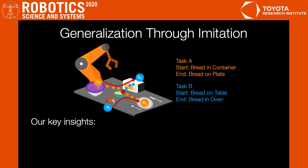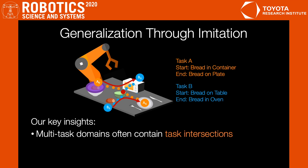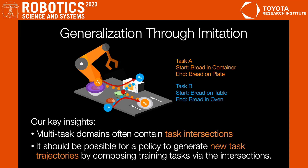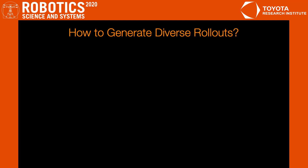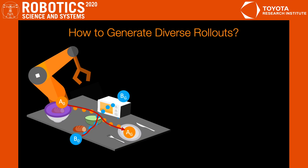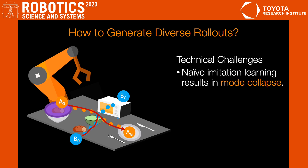Our key insights are: multi-task domains often contain task intersections, and it should be possible for a policy to generate new task trajectories by composing training tasks via the intersections. But how do we encourage the policy to generate diverse rollouts? If we naively train imitation learning policies on the demonstrated data of the two tasks, the policy tends to collapse to a particular goal, as indicated by red arrows in the picture.